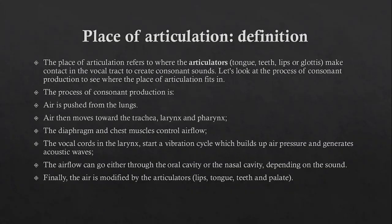The definition: the place of articulation refers to where the articulators — tongue, teeth, lips, or glottis — make contact in the vocal tract to create a consonant sound. Now, on which articulator does the consonant sound occur?